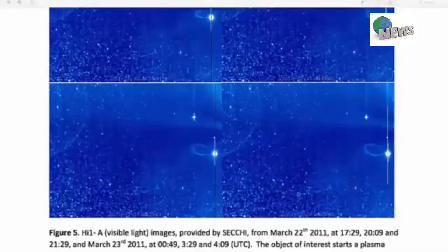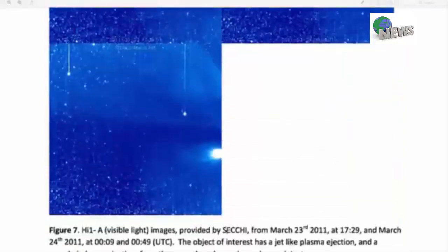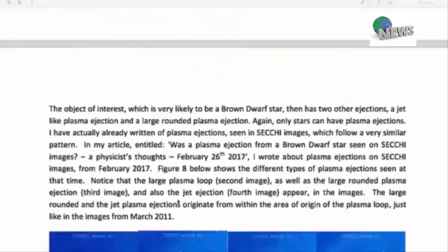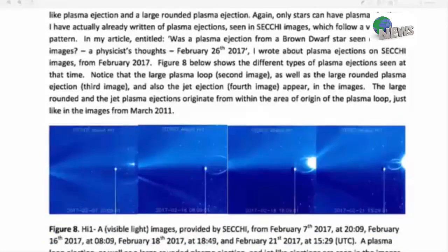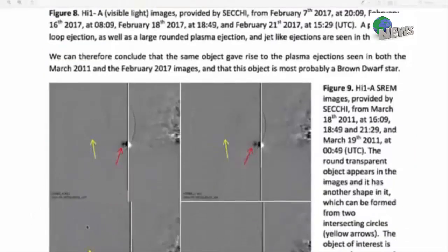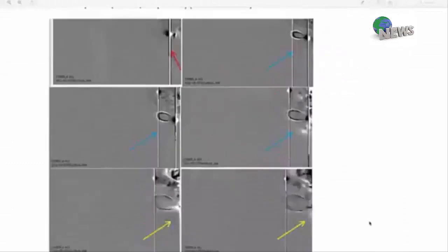Furthermore, images provided by STEREO show that the object of interest starts a plasma ejection that turns into an extremely large plasma loop. Again, it can't be a lens flare effect as told by some others that are mistaken on it. These large orbs are also visible in the system and there's a plasma loop to illustrate what we're looking at. So you can see the plasma loops are very similar. HI1A visible light images in 2011 show that the object of interest has a jet plasma ejection around a plasma ejection from the area where the plasma loop originates. So what we're saying here is that this thing is basically been riding shotgun with our solar system for a period of time since 2011.